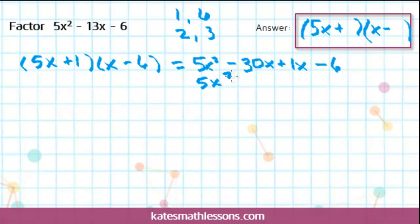This comes out to 5x squared minus 29x minus 6. So I got the minus 6 part right and I got the 5x squared part right, but the middle term was supposed to come out to a negative 13x and I got a negative 29x. That tells you that this is not the correct answer.